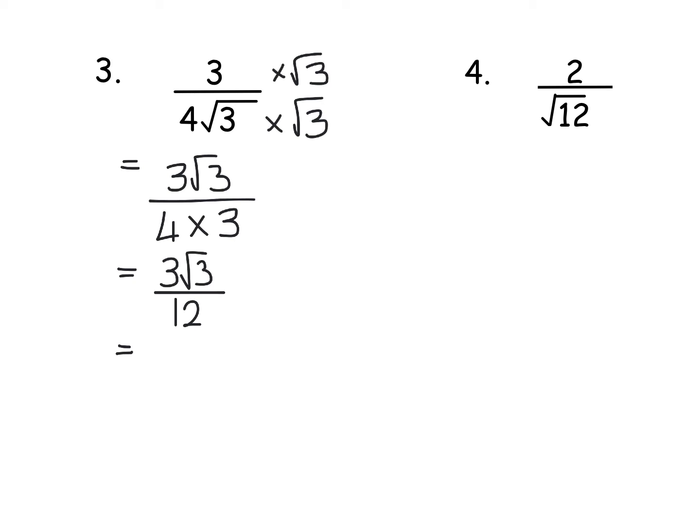The 3 and the 12 both divide by 3 so that gives you 1 on the top but we don't write it over 4. So just root 3 over 4. What I've essentially done is cancel down that 3 and that 12 to give you a 4 on the bottom.